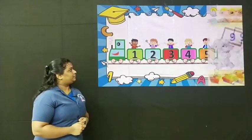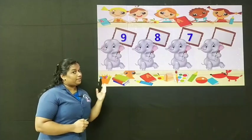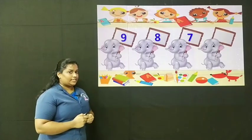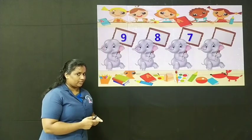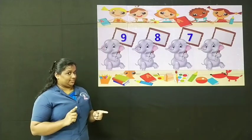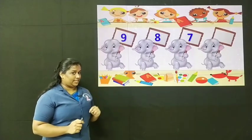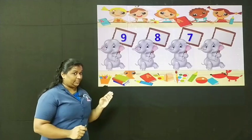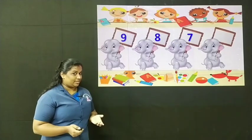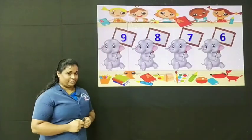One more question. Look at the number held by the baby elephant. Is it forward counting? No, it is backward counting. So count backward and let's find the missing number. 9, 8, 7 — then the missing number is 6. Very good.